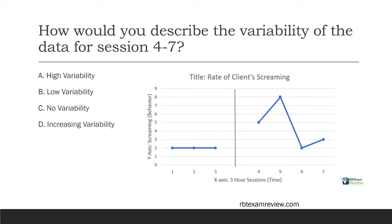What about sessions one through three? Looking at that, you can see there's no variability — the data is all the same. So just by looking at the graphs, you'll be able to answer these questions. Now, if you're not sure whether it's high, low, or none, another way to look at variability is the distance between the lowest data point and the highest. In our case we have eight and two. Eight is the highest, two is the lowest. If you subtract those, you get six, which is a pretty significant difference given that our chart goes to nine. That's high variability. You can do the visual analysis or calculate it to determine how much the data fluctuates.